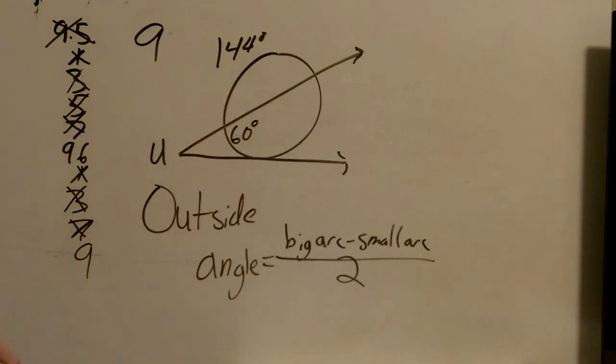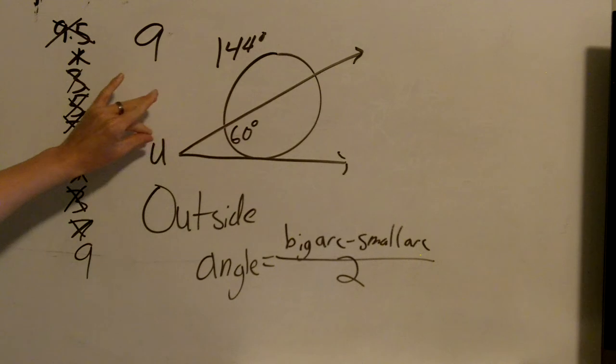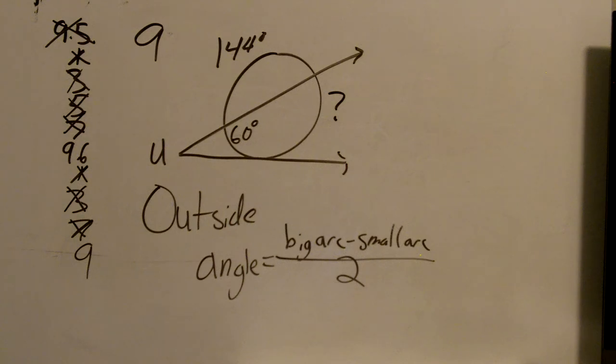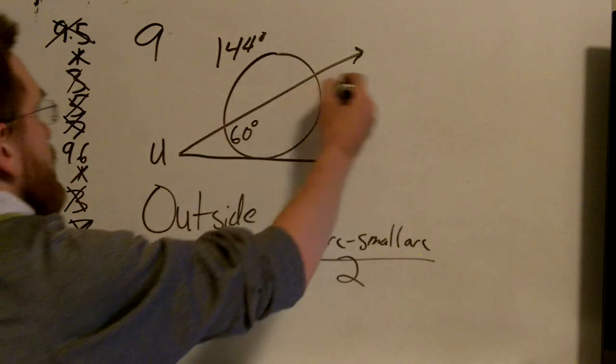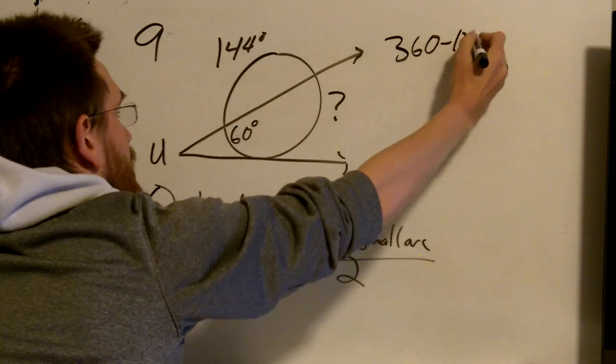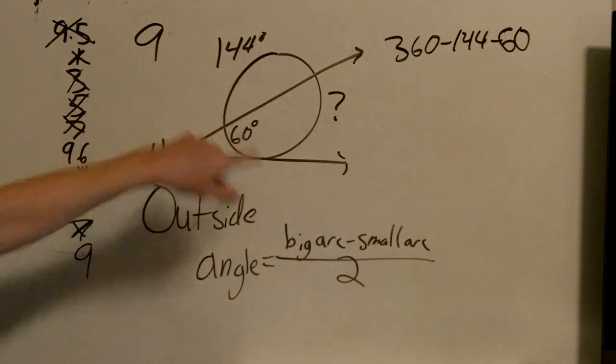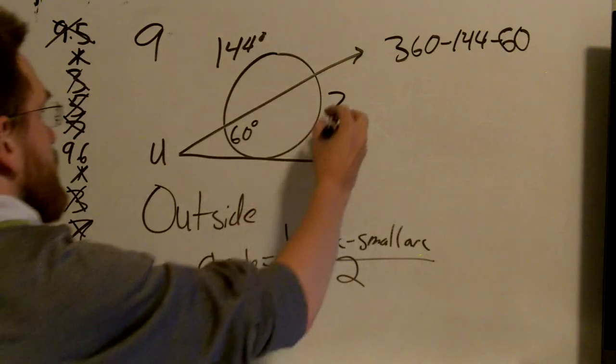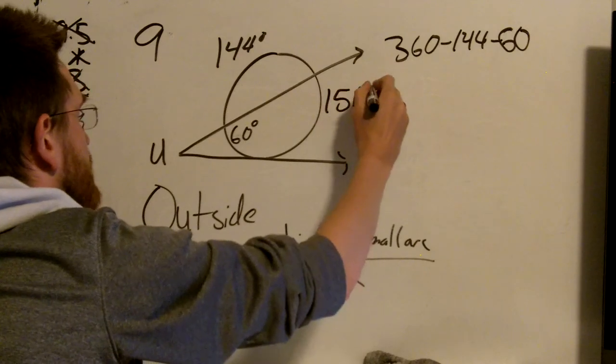Now, you may want to initially just say, oh, big arc minus small arc. But we want to use the arcs that are in between the two rays, that are in between the angle. So I want to know what this is. I need to know what that is before I can do anything else. Well, I know a circle adds up to 360. So I'm going to take 360 minus 144 minus 60. And that gives me 156. So this question mark is now 156 degrees.